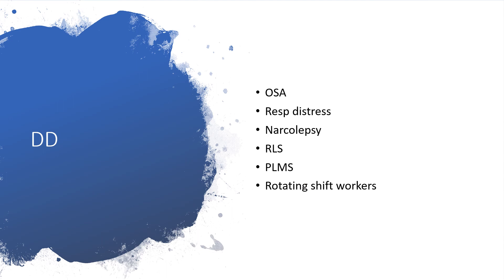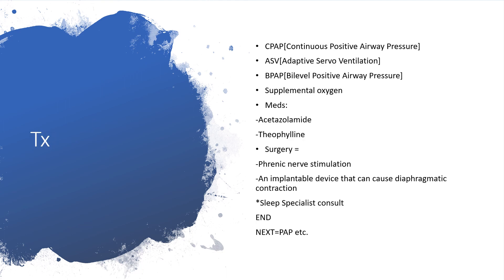Differential diagnoses include obstructive sleep apnea, respiratory distress, ankylosing conditions, restless leg syndrome, periodic limb movement of sleep, and rotating shift workers. Treatment can include continuous positive airway pressure (CPAP), adaptive servo ventilation, bilevel positive airway pressure (BiPAP), and supplemental oxygen. Medications such as acetazolamide and theophylline may also help, and surgery with phrenic nerve stimulation and an implantable device causing diaphragmatic contraction is another option.